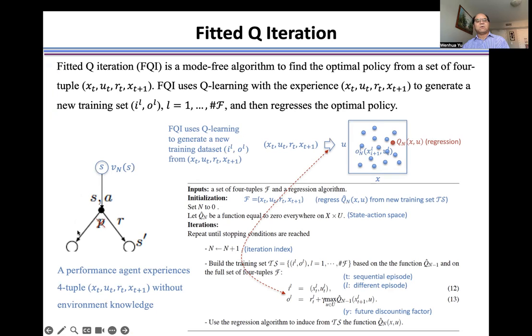For example, we have a performance agent, such as a teacher or expert. Without this environment information,